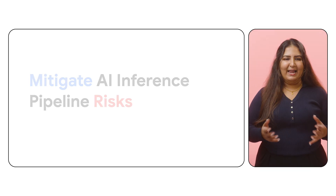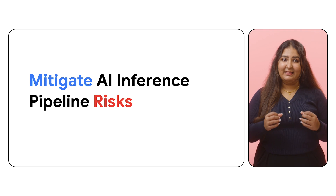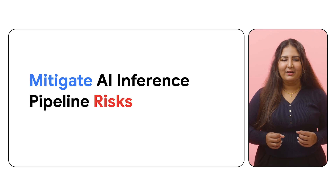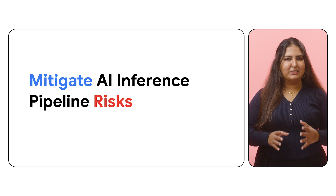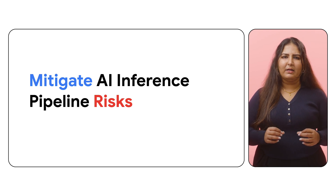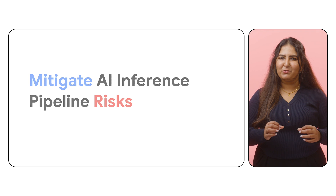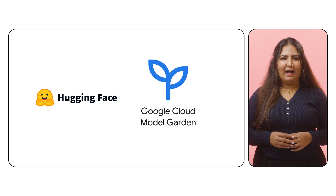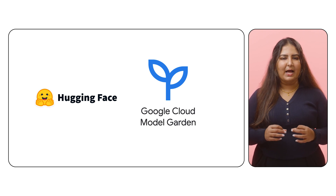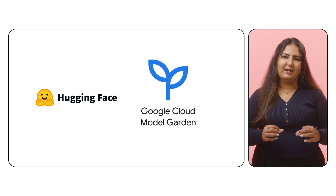These are just some of the major security risks associated with the AI inference pipeline. Now let's see how to mitigate these risks by leveraging Google Cloud and open source software. As a first step, it's important to ensure the AI model is from a trustworthy source. Trustworthy model sources like Hugging Face or Google Cloud's Model Garden have hardened storage and serving systems to prevent unauthorized access and protect against model theft and tampering.